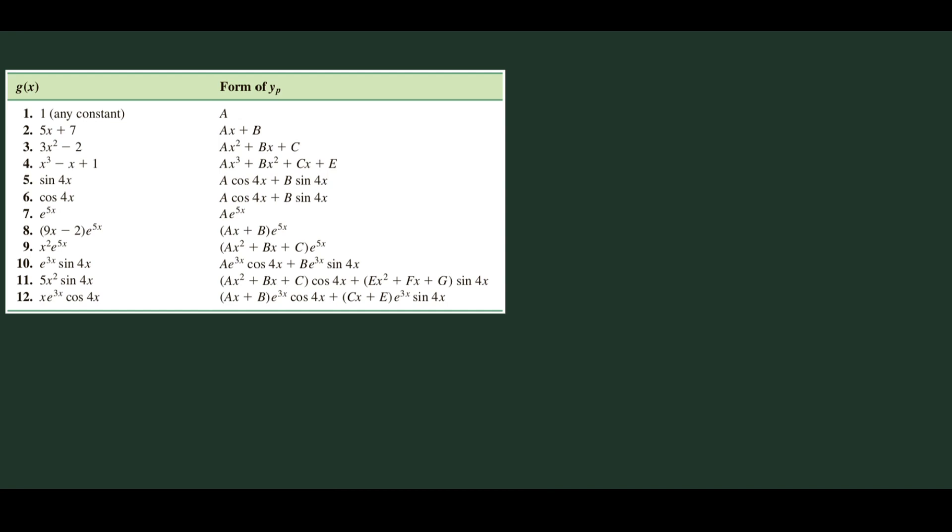Similarly, for cosine 4x, the form is a cosine 4x plus b sine 4x — they have the same form. For an exponential function e raised to 5x, the general form is simply a times e raised to 5x, where a is any arbitrary constant.